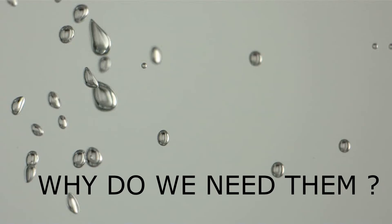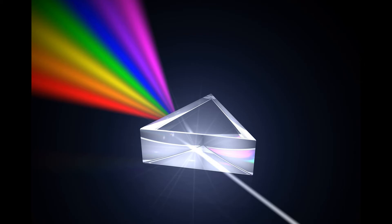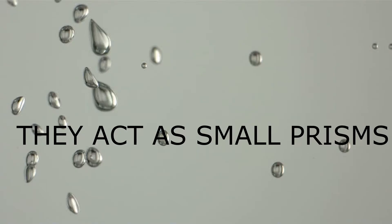You might ask another question that why do we need rain drops in order to form rainbows? The work that the water droplet does is the same as the prism. In simpler words, the water droplets act as small prisms.